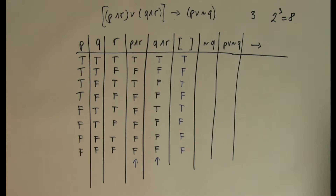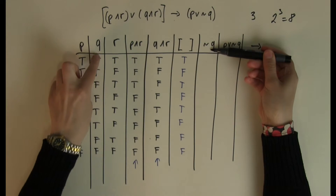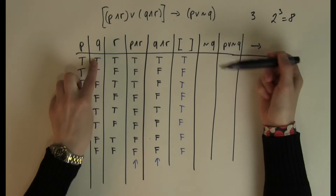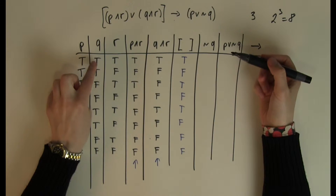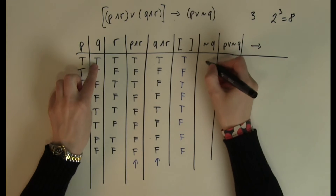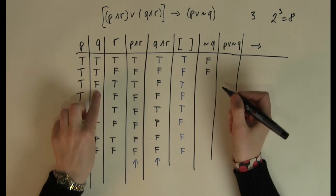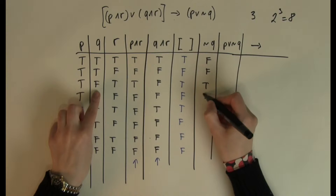Next I need NOT Q. Q is in its column, so NOT Q is just the opposite: where Q is true, NOT Q will be false, and when Q is false, NOT Q will be true.